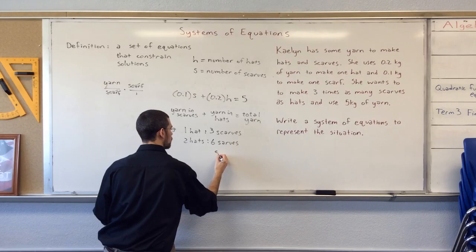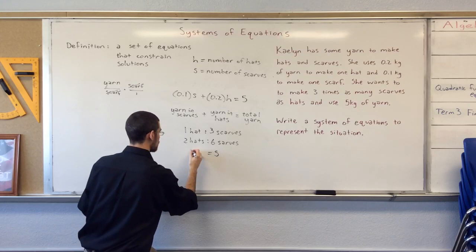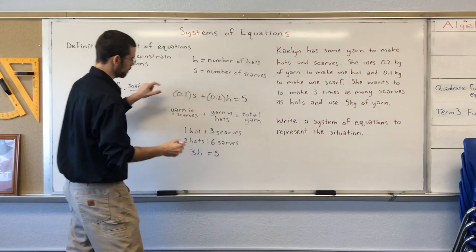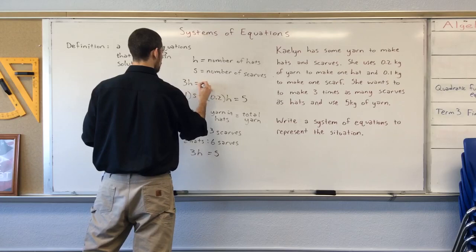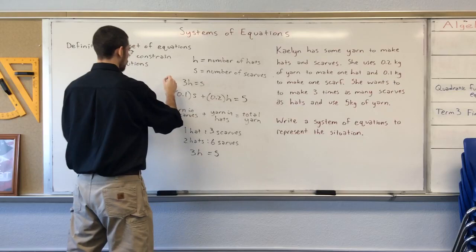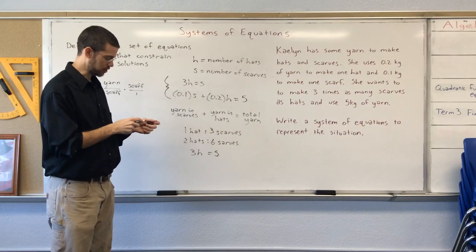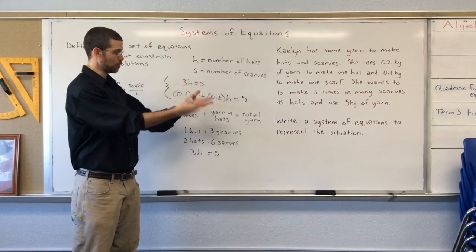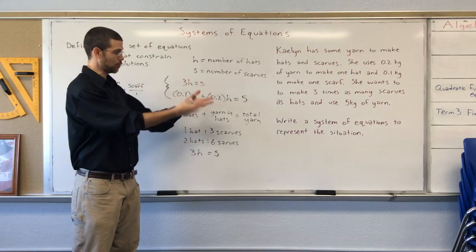In general, we have a number of scarves equaling three times as many hats. Three times H equals S. And here is our second equation. I'll write it up here so we can have our system nice and neat. We've got 3H equals S as one of our constraints. And the other is here. You can show that this is a system of equations. This is just mathy notation by putting these curly braces on the left. And that shows you that these two equations belong to the same situation or the same context. They are constraints on the same variables.